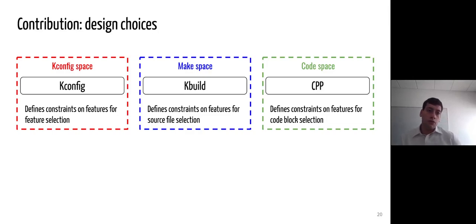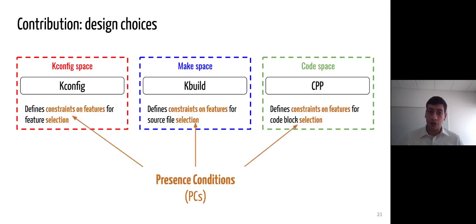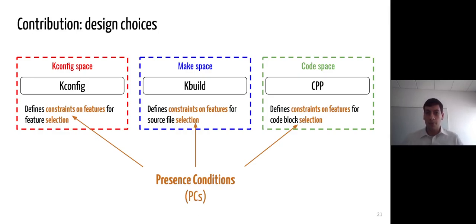The three steps of the build system define constraints in the form of boolean formulas to select assets — being features for kconfig, source files for kbuild, and code blocks for CPP. Concerning CPP, these constraints have already been formally defined by Sincero et al. as presence conditions. In this model, we generalize this notion of presence condition for all constraints in the three spaces to be able to reason over all of them.